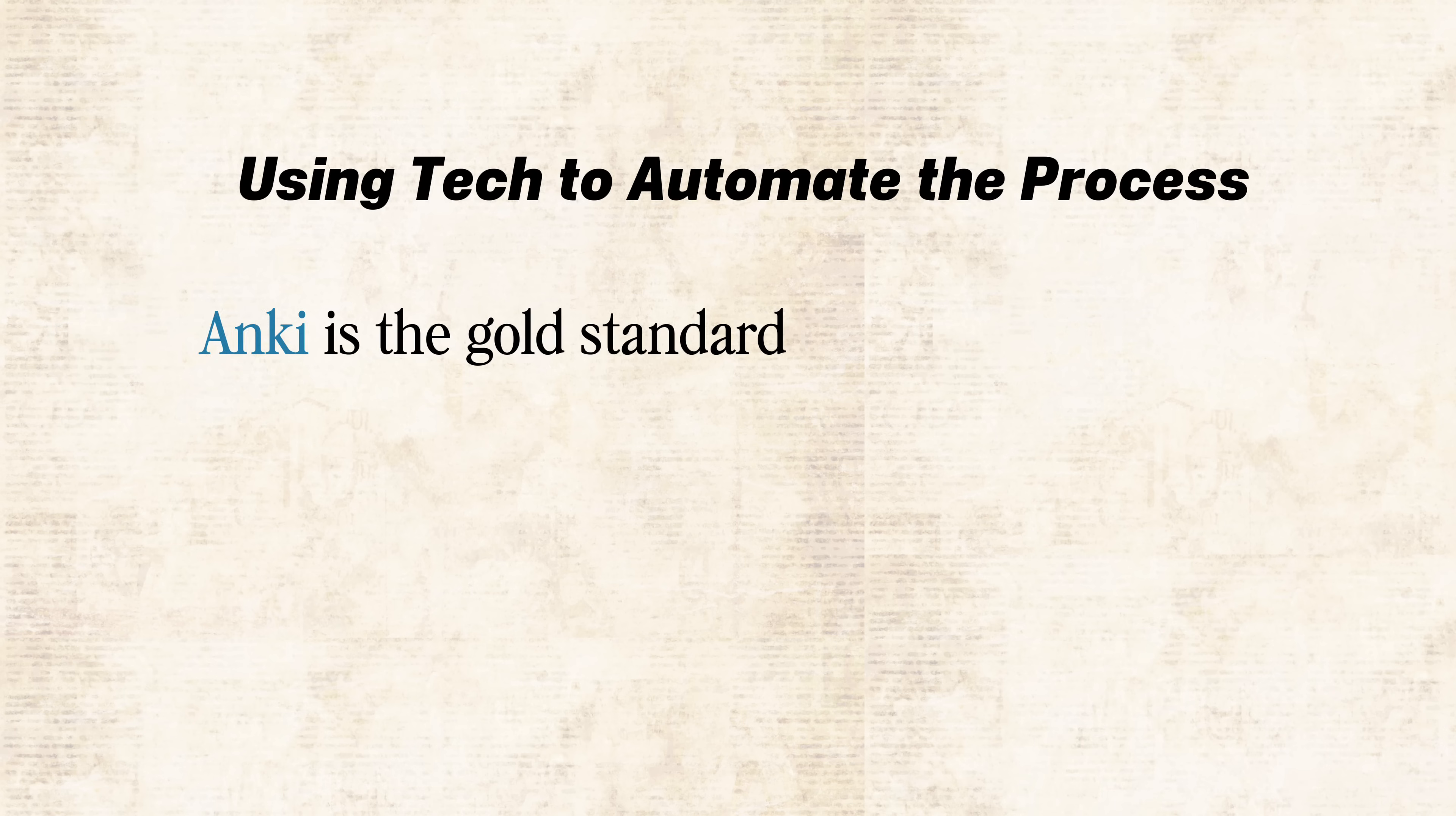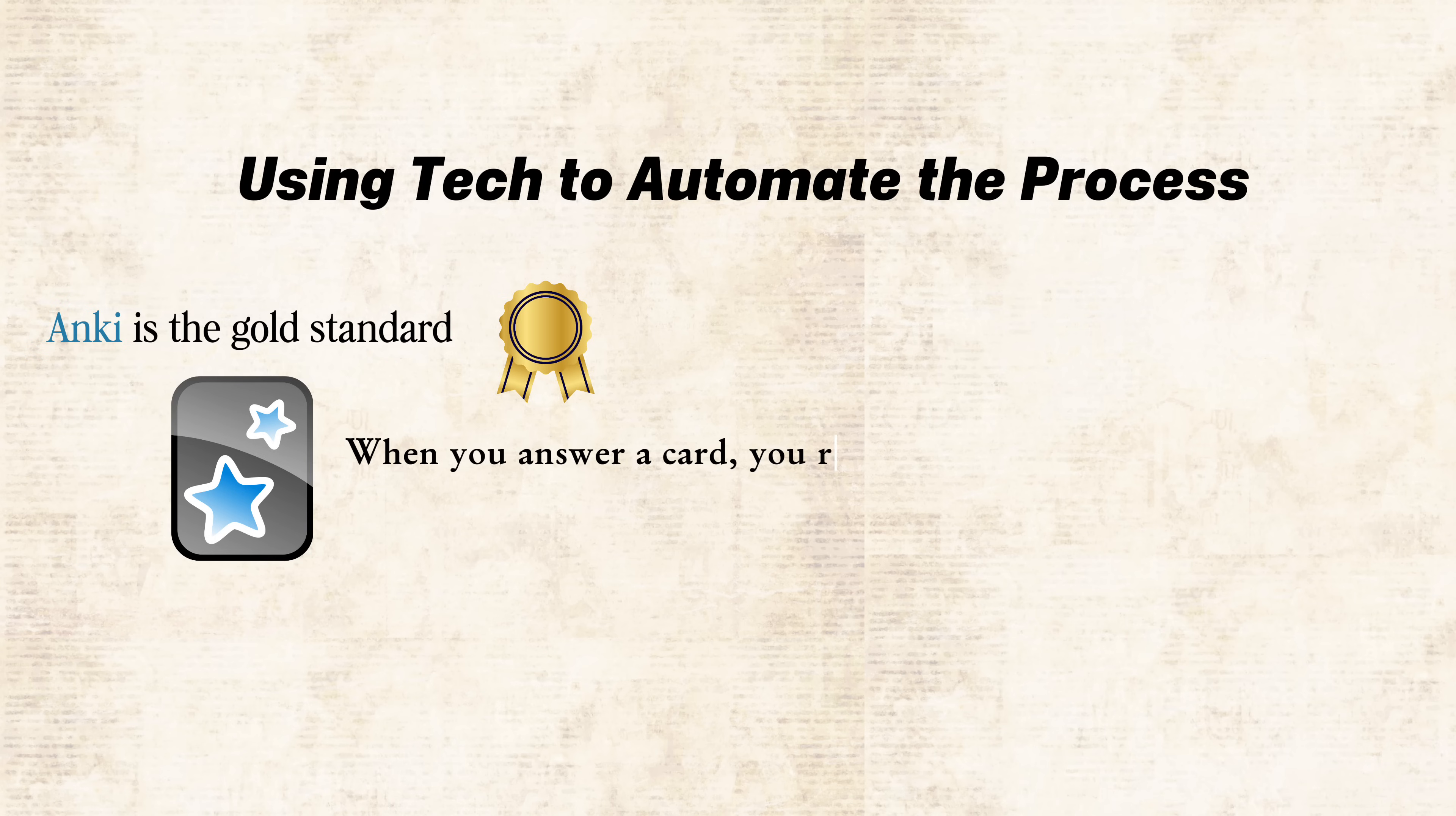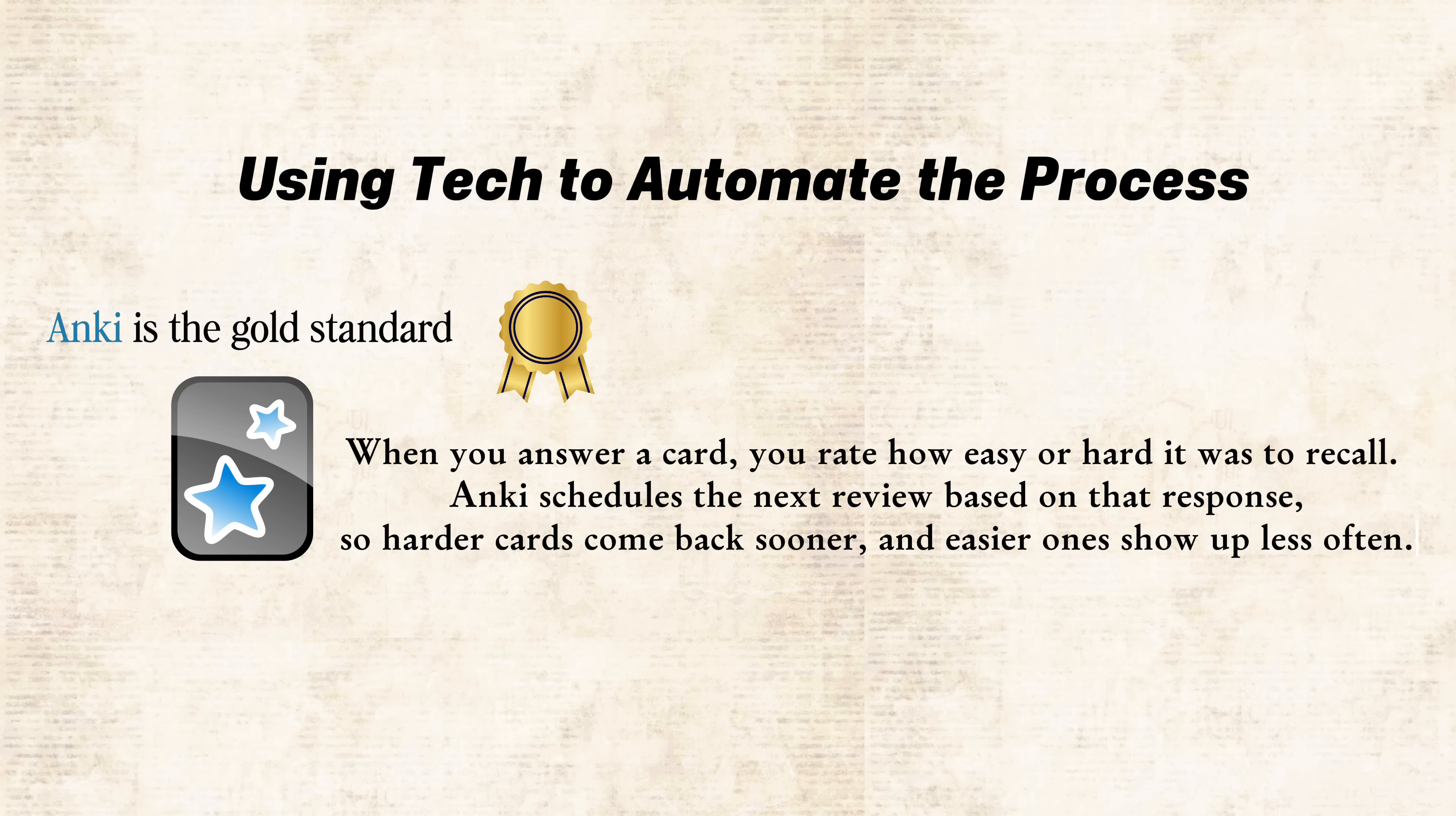Using tech to automate the process. If you want to save time, Anki is the gold standard. It's free and it's smart. When you answer a card, you rate how easy or hard it was to recall. Anki schedules the next review based on that response. So harder cards come back sooner, and easier ones show up less often. That's called an adaptive spaced algorithm, and it mirrors how your brain actually learns. If it feels too good to be true, try it. Medical students around the world swear by it.